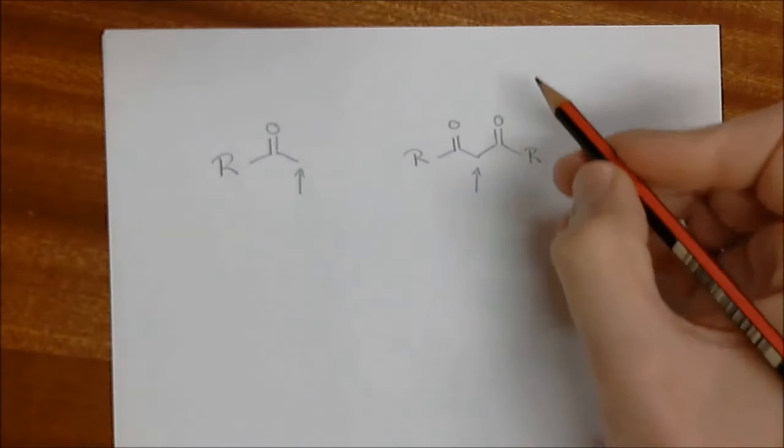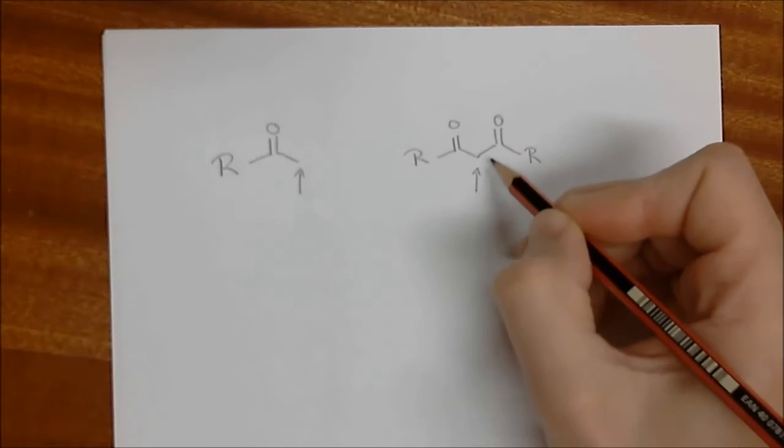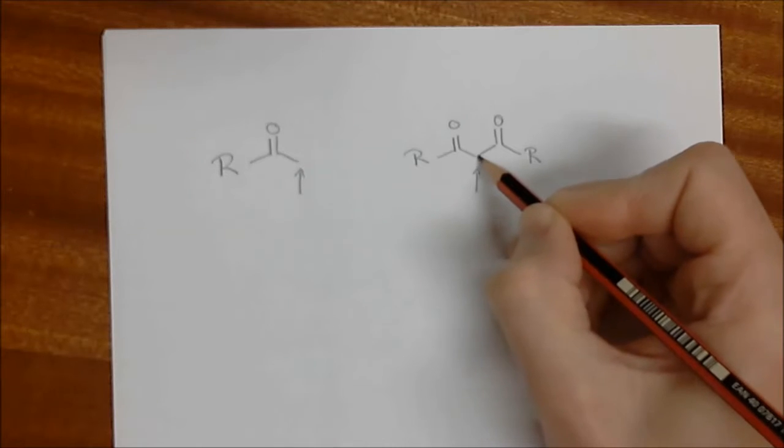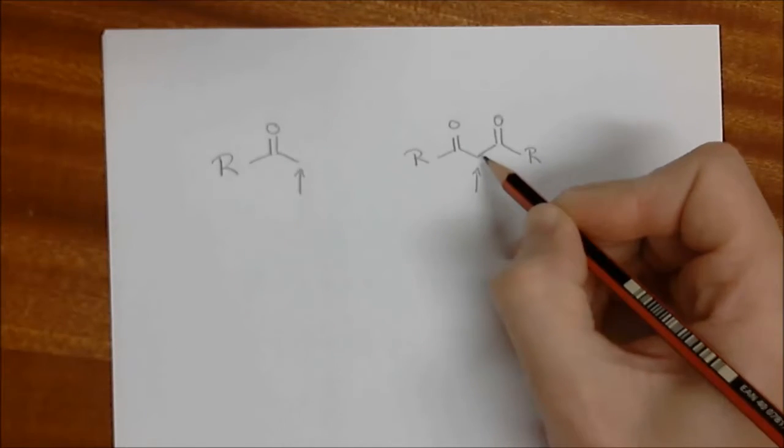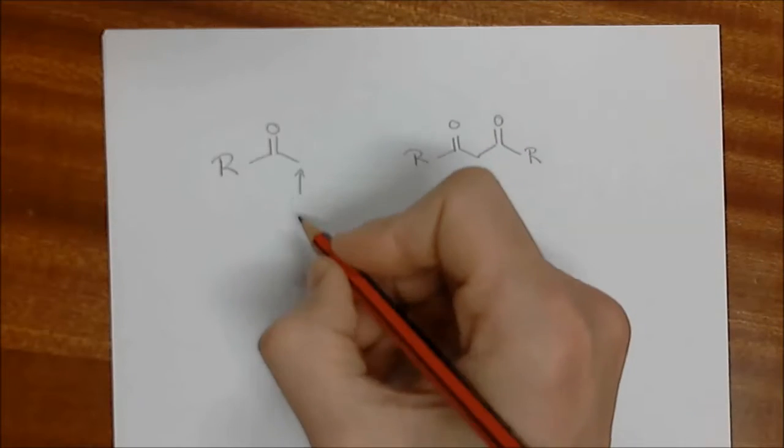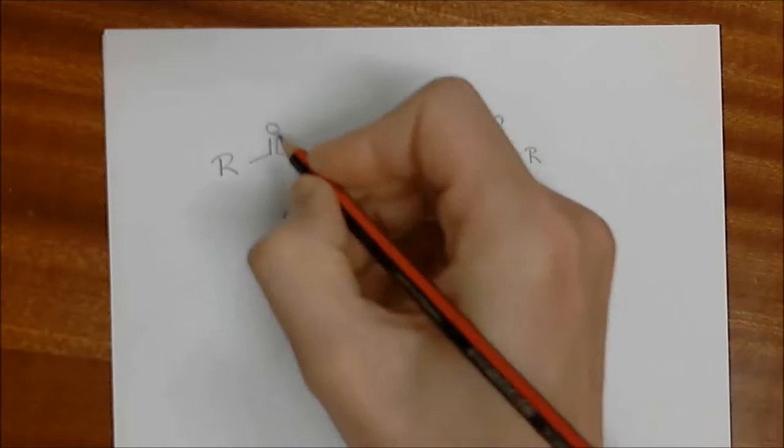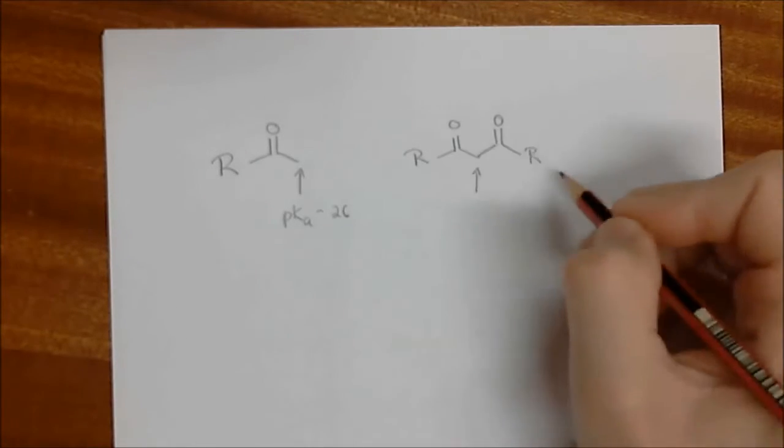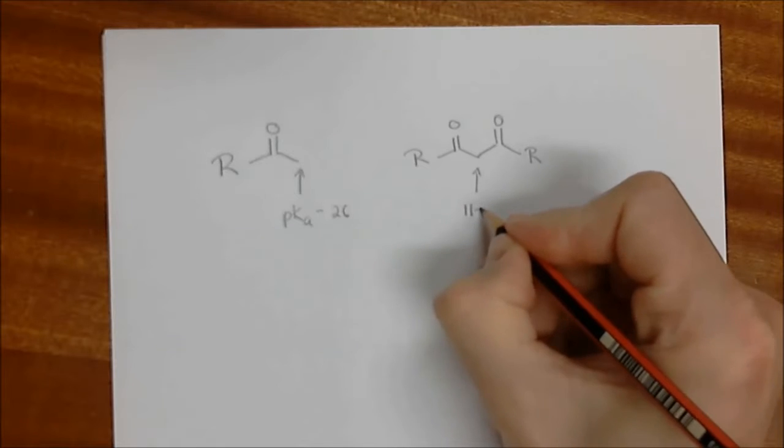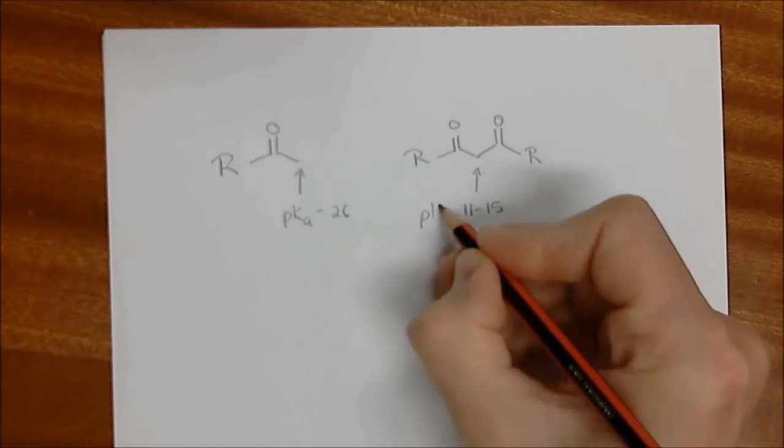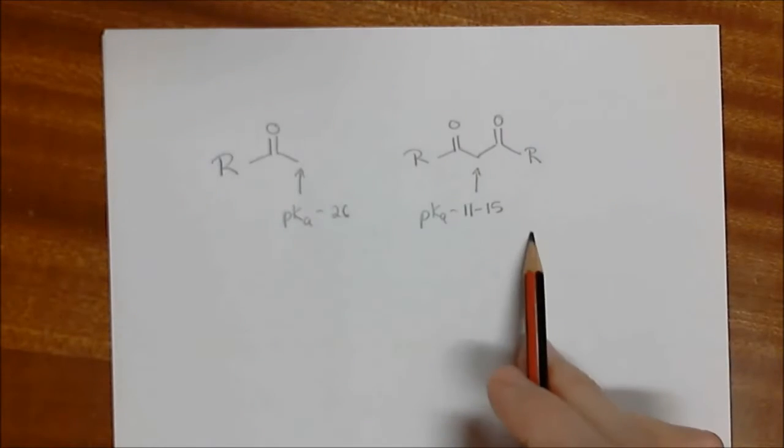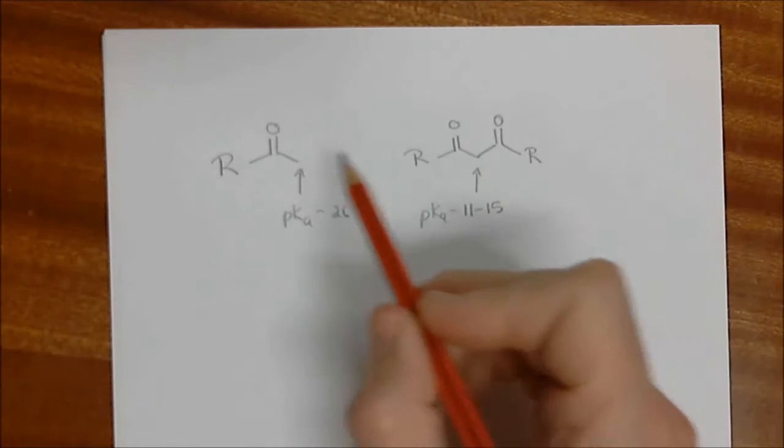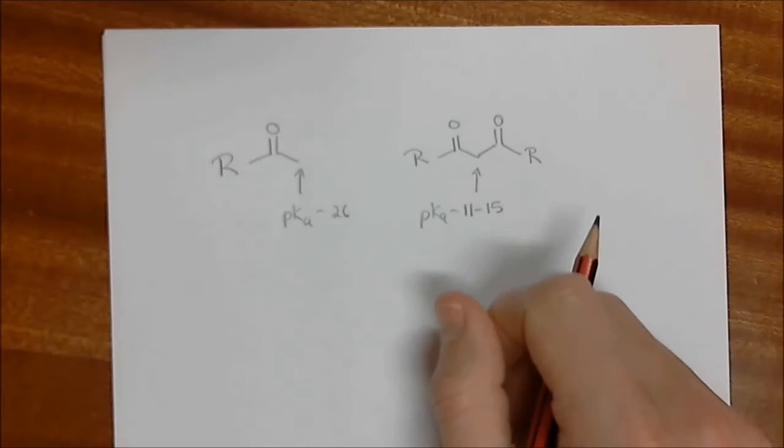By now you should have picked up that if we have two carbonyl groups next door to a carbon with hydrogens on it, because there are two of them, it's actually a lot easier to remove the hydrogens in this kind of setup. So the pKa of hydrogens next to a ketone is around 26, while in this kind of setup, it's in the regions of 11 to 15 pKa units. That's quite significant because that's more than 10 orders of magnitude difference between the acidities, and we have to take that under consideration.